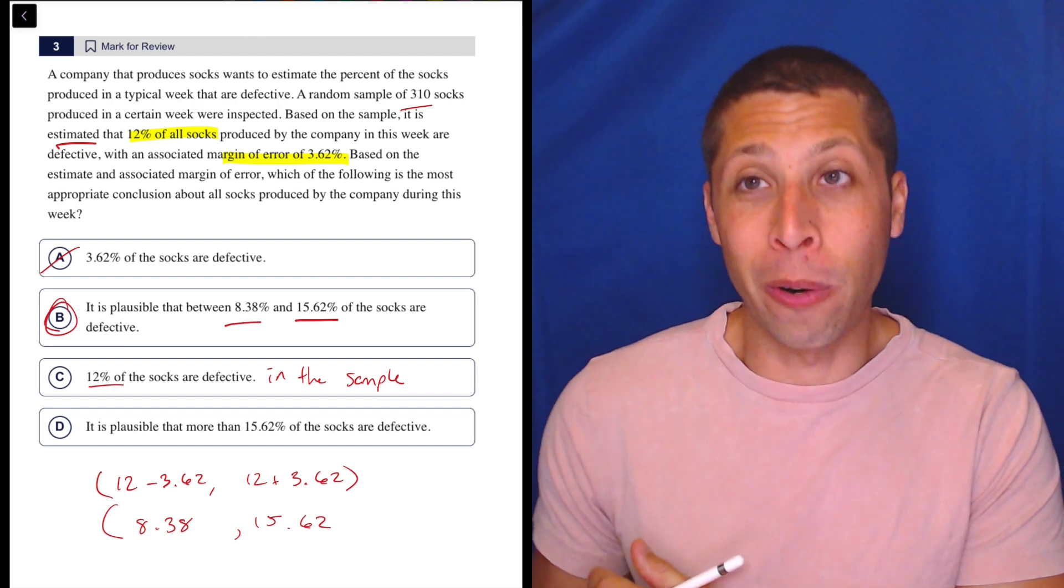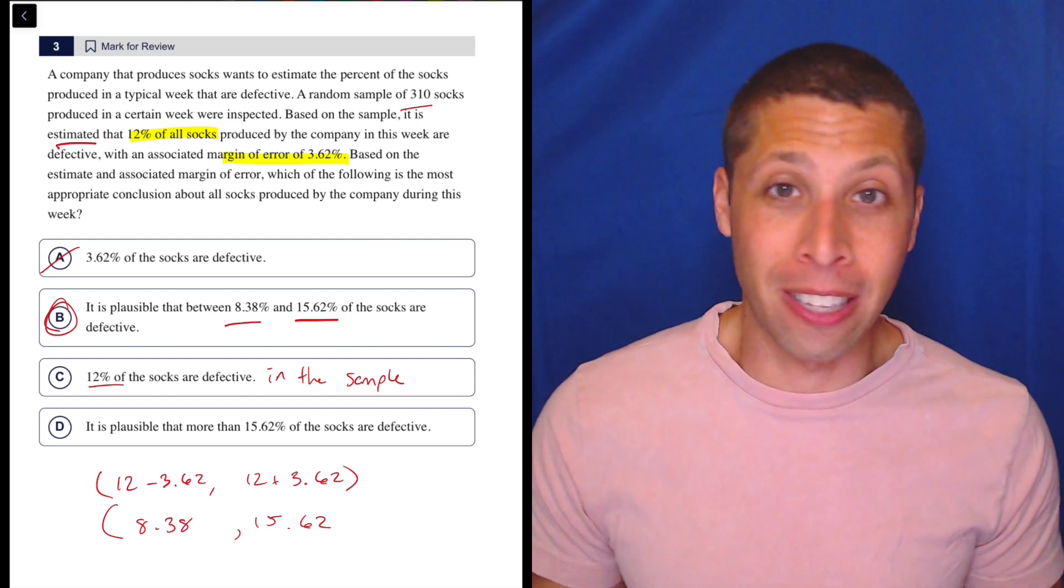but it's possible. It is possible because maybe we just happened to pick a batch of 310 socks that were really good. And so if we had picked another 310, maybe we would have realized, oh, actually, these socks are terrible.